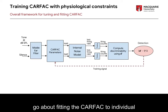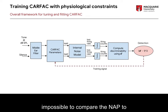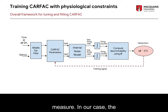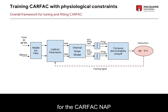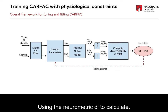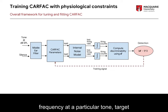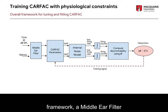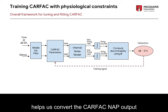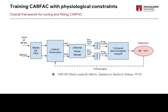But how do we go about fitting the CARFAC to individual hearing losses? Since it is almost impossible to compare the NAP to equivalent biological data, we instead connect it to an observable behavioral measure — in our case, the clinical measure of the audiogram threshold — by using this framework to calculate thresholds for the CARFAC NAP at different frequencies. We use the neurometric D-prime to compare the difference between the CARFAC output to a particular tone frequency and silence. We also incorporated a middle ear filter prior to the CARFAC and an internal noise model after the CARFAC, which helps us convert the CARFAC NAP output into high spontaneous rate-like activity.